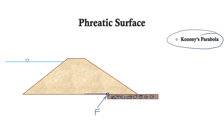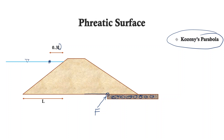It is found empirically that when the parabola is extended to the upstream side, it will intersect the upstream water surface at a point which is 0.3 times L from the intersection between the water surface and the upstream dam surface. This length L is the horizontal length of the wetted upstream slope. To draw the parabola, we recall the property that any point on a parabola is equidistant from its focus and its directrix, where the directrix is a straight line.